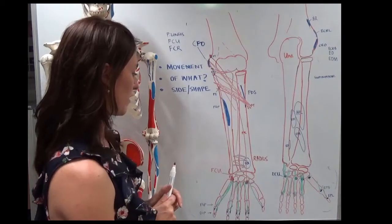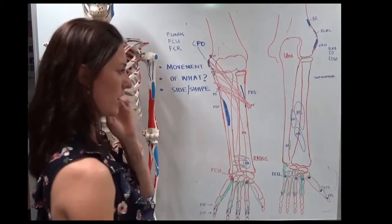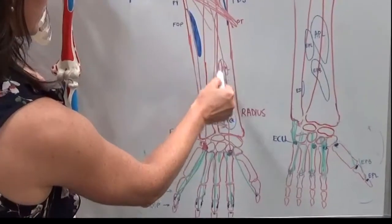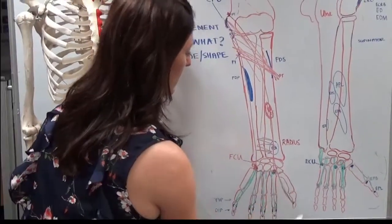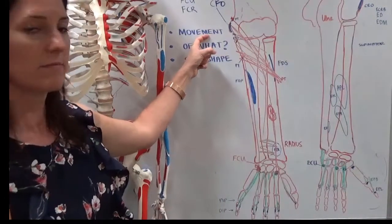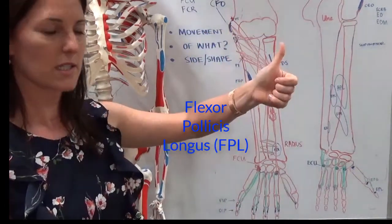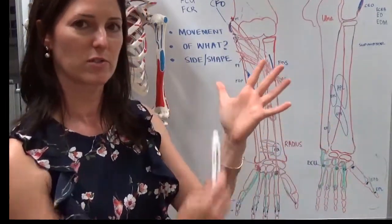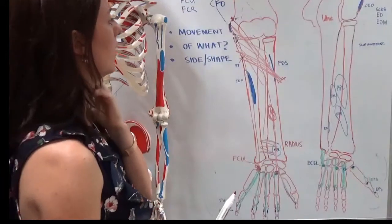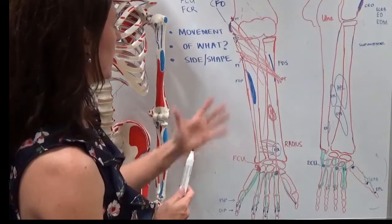We need to talk about the thumb. So the thumb is special. It has its very own tendon. It originates here and goes all the way to the tip of the thumb, and it's called the flexor of what? The pollicis, and in this case we call it the longus, because there are some extra muscles in the palm of the hand which we need to distinguish it from.